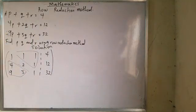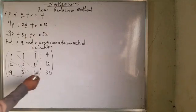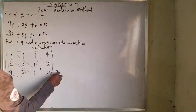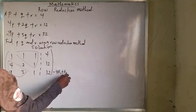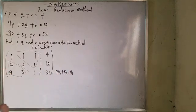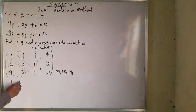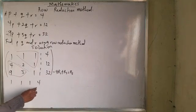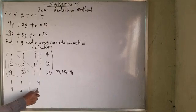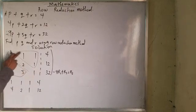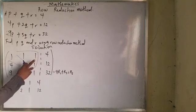That is what I'm going to achieve. I can start by saying minus 9 R1 plus R3 equals R3. What I'm trying to say is that I will have 1, 1, 1, 4, and I will have 4, 2, 1, 12. Now everything becomes minus 9.